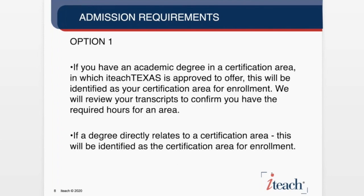Option one: if you have an academic degree, that is what we will approve for your area of enrollment. An academic degree would translate to a 7 through 12 certification area or an all-level certification area, early childhood through 12th grade. This is determined first because this is what you chose to go to school in — the vast majority of your undergraduate training is there and it sets you up for the best chance of success on the certification test. Academic degrees that directly translate to a certification field are our first and primary method of identifying a certification area.